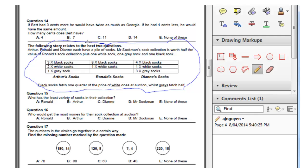Question 15 says who has the least variety of socks in their collection? Well, you can see even before I've read any information I can see Arthur socks, Ronald socks, Diane socks. We've only got two of the three types in there so it would be Ronald socks. We also have Mr. Sockman here, and we know that his collection is worth half of the value of Ronald socks plus one white sock and one grey sock and one black sock, so definitely he does not have the least variety. You can already see from there that it's Ronald.